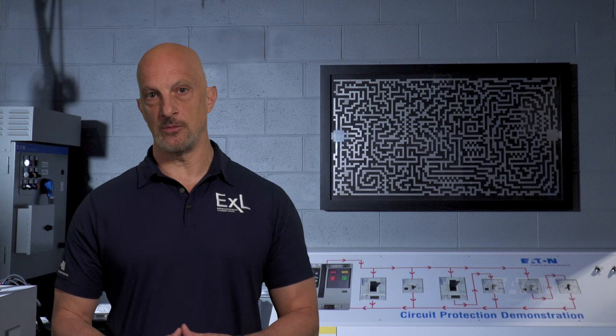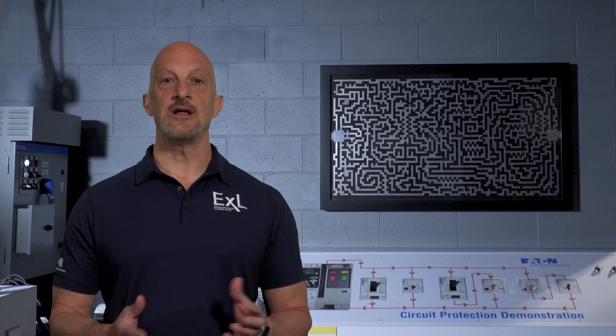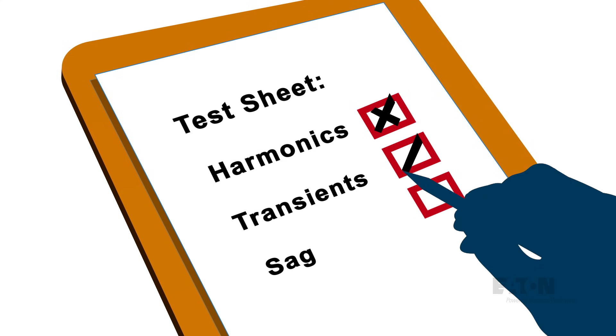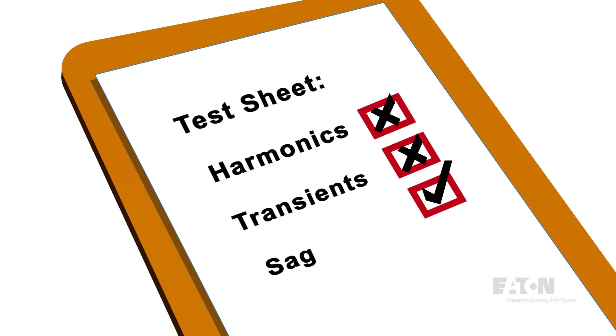Every power quality engineer has stories about problems that appear to be unsolvable. Some eventually get solved, others never do, and still others come and go seemingly with the wind. False conclusions are often reached as a result of many factors, including the experience level of the troubleshooter, the type of problem, and the equipment available for analysis.